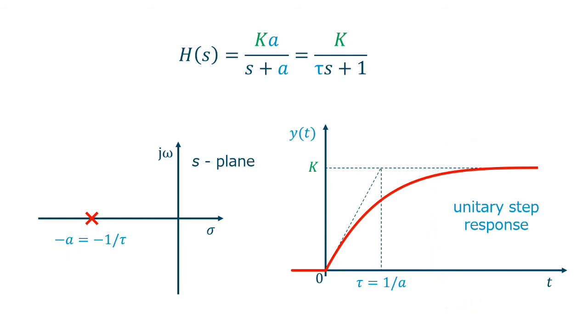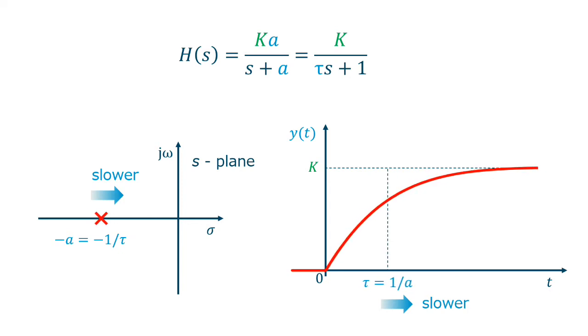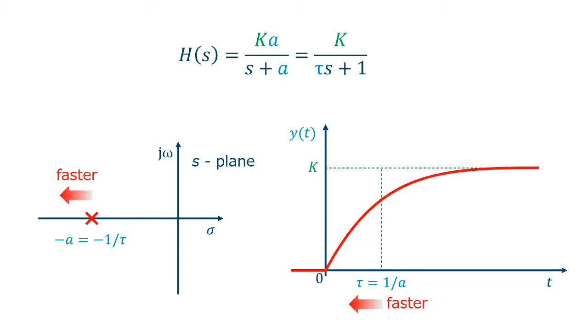We already know that the pole has to be on the left side of the s-plane for stability. The furthest the pole is to the left, away from the origin, the faster the system's response will be. Changing the value of the gain, k, only changes the amplitude of the response. When the pole becomes near to the origin, the response is slower. When the pole becomes farther from the origin, the response is faster.